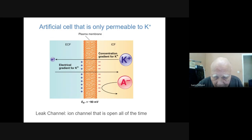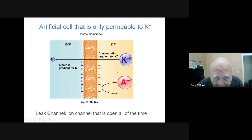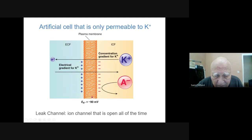There's a leak channel that's open all the time, so potassium is always diffusing out of the cell through a leak channel. This creates positive charge on the outside compared to negative charge on the inside. Because potassium is leaking out, the membrane voltage is minus 90 millivolts — the inside is negative with respect to the outside.